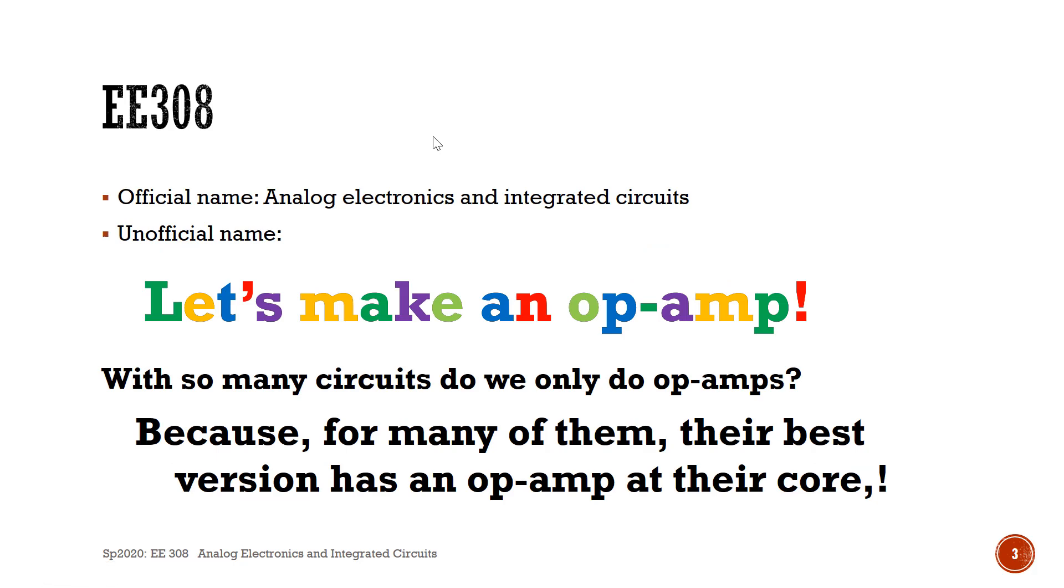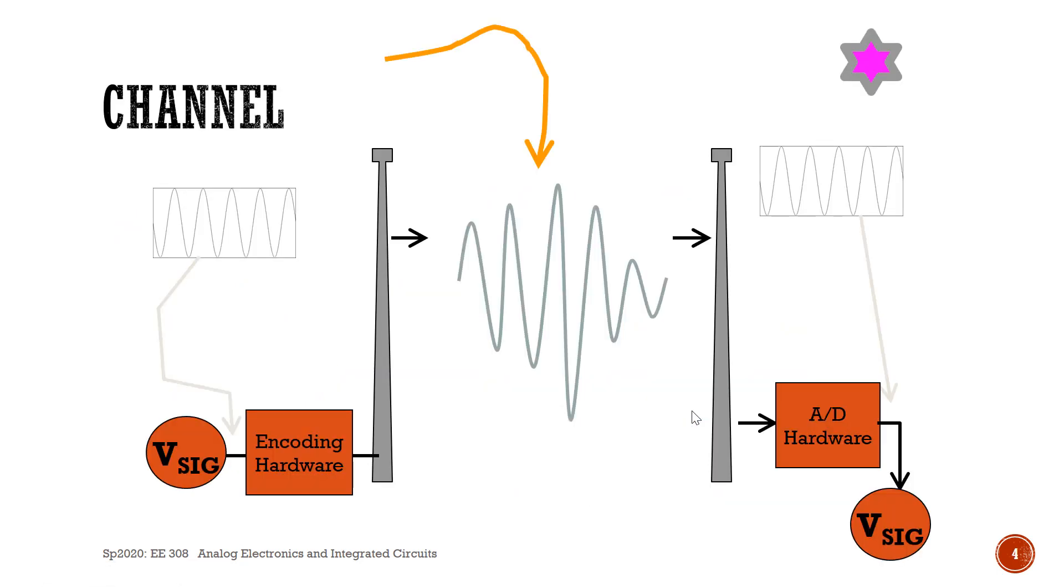There's all of these different kinds of analog circuits. Why are we only doing op-amps? With so many circuits, why do we only do op-amps? Because for many of them, their best version has an op-amp at their core.